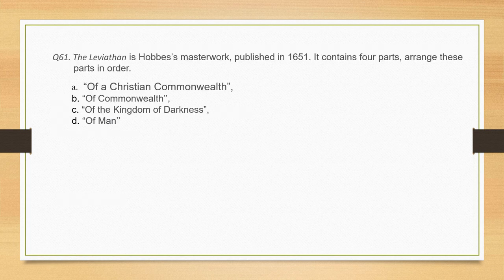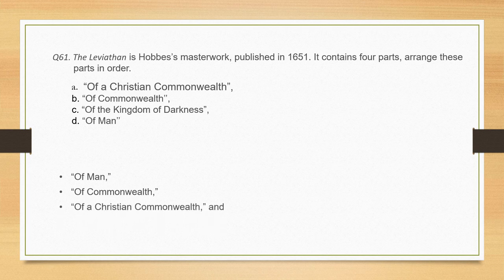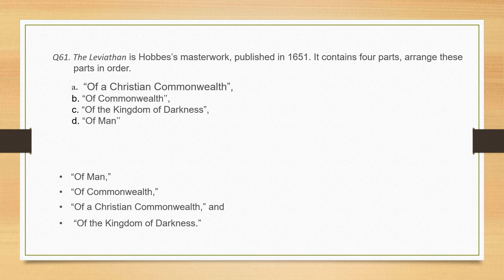The Leviathan is Hobbes' masterwork, published in 1651. It contains four parts — arrange these in order: part 1 is Of Man; part 2 is Of Commonwealth; part 3 is Of a Christian Commonwealth; part 4 is Of the Kingdom of Darkness. The correct sequence is D, B, A, C.